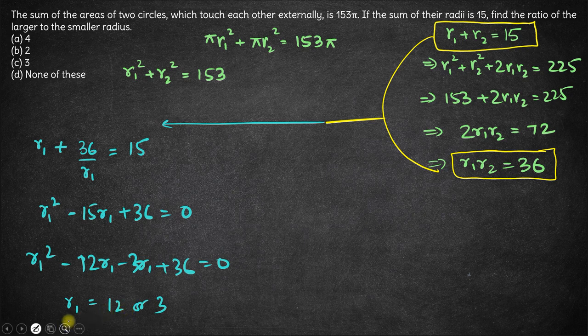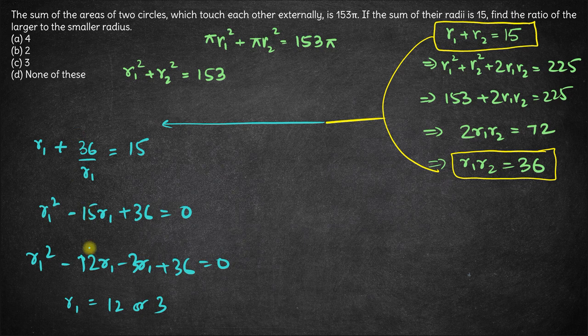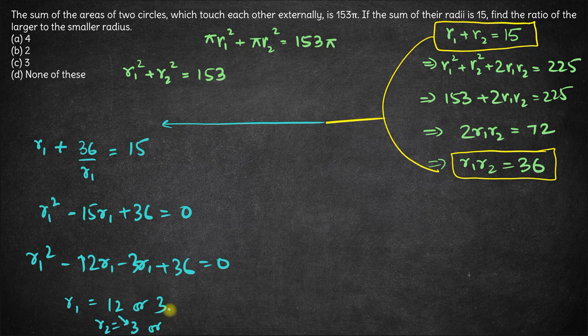If r1 is 12, in that case r2 must be 3, and if r1 is 3, in that case r2 must be 12.